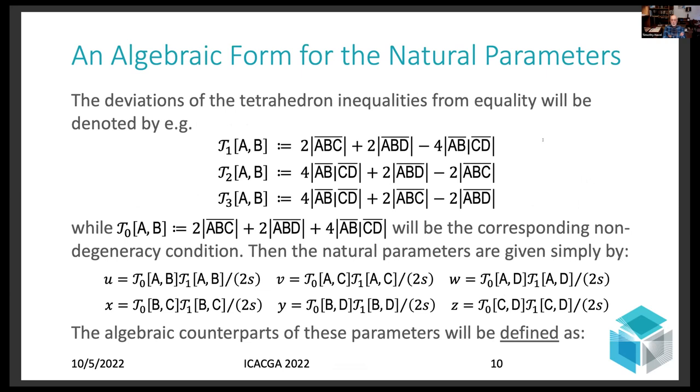An algebraic form for the natural parameters, which I have so far defined geometrically, can be derived as follows. You simply look at the deviations of the tetrahedron inequalities from holding as equalities, just as I did with the Heron parameters back on almost my first slide. Okay, and we'll also be needing, we're going to denote these, in the case of each triple, we're going to have three such deviations denoted here as tau 1, tau 2, and tau 3. Tau 0 will be their sum. It's kind of an analog of the semi-perimeter for a triangle, but this is a bit different.